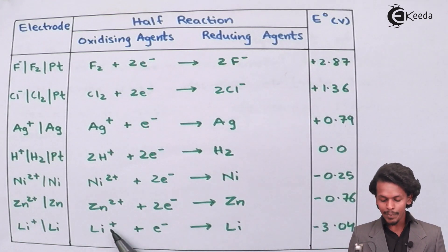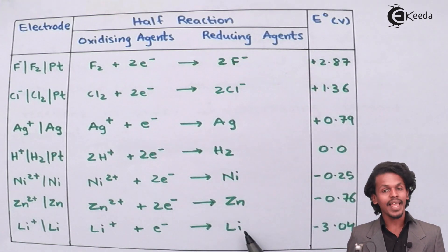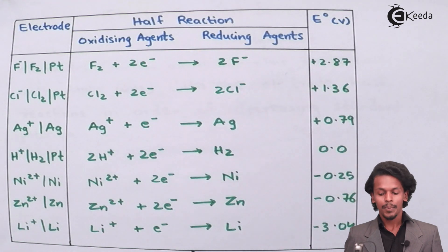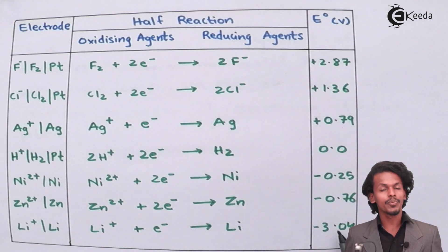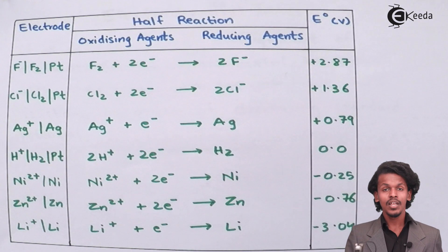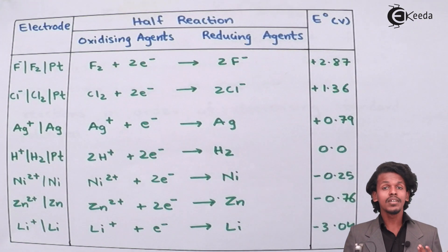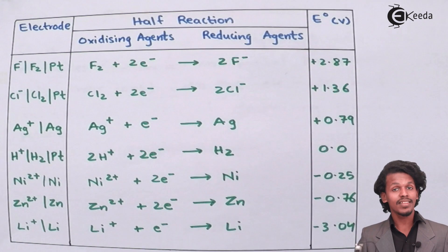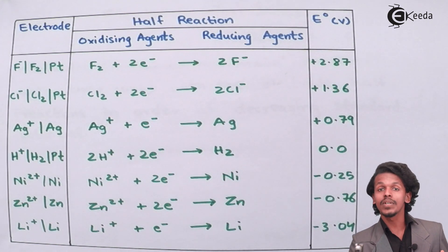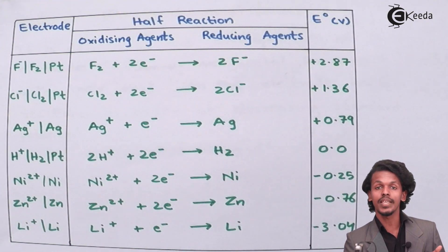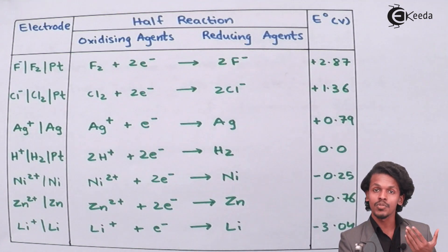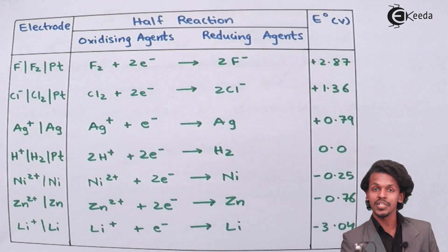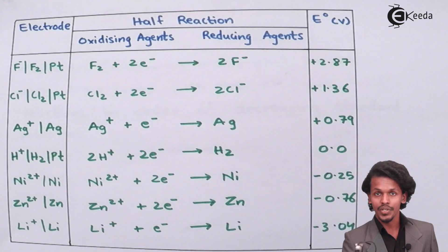For example, Li⁺ accepting an electron to form solid Li has a reduction potential of −3.04V, so its oxidation potential would be +3.04V. The magnitude does not change — only the sign changes when converting between reduction potential and oxidation potential.